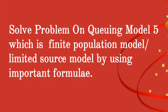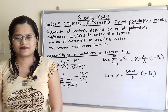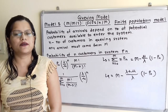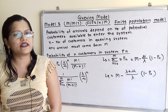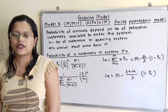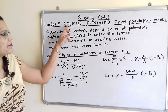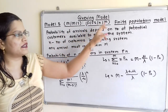We will solve one problem on queuing model 5, which is the finite population model or limited source model, using important formulas. This model is symbolically represented as M, M, 1, FCFS, N, N.